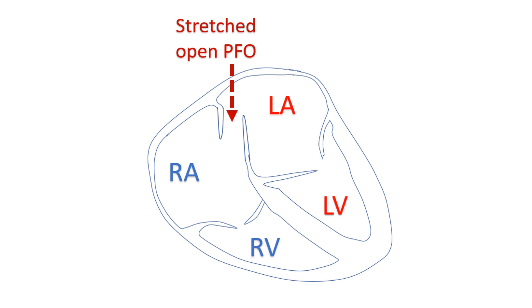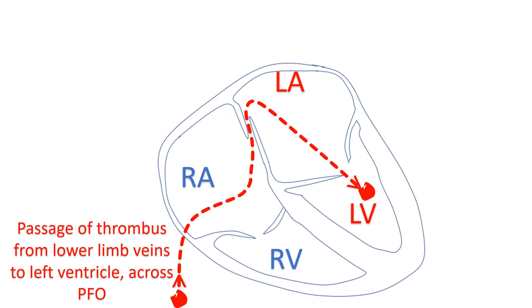If too much of right atrial blood with lower oxygen saturation reaches the left atrium, systemic arterial oxygen saturation falls, causing cyanosis. Small PFO cannot produce much problem due to shunting of blood across it unless it is stretched open by other diseases.